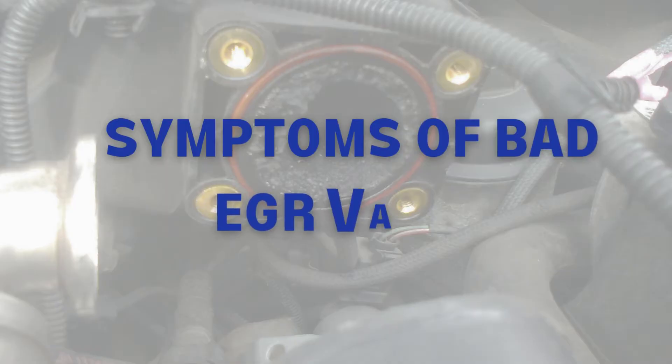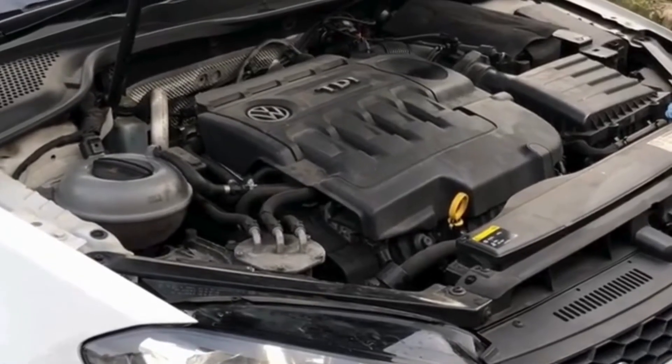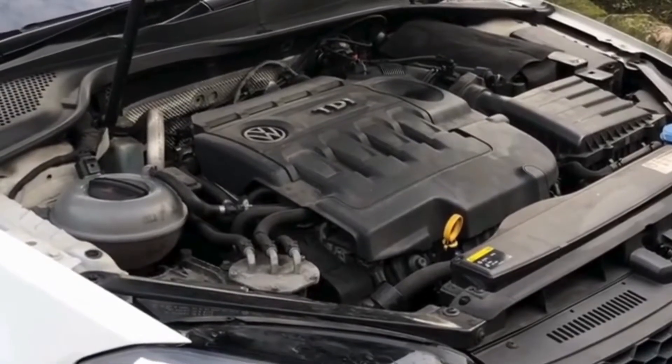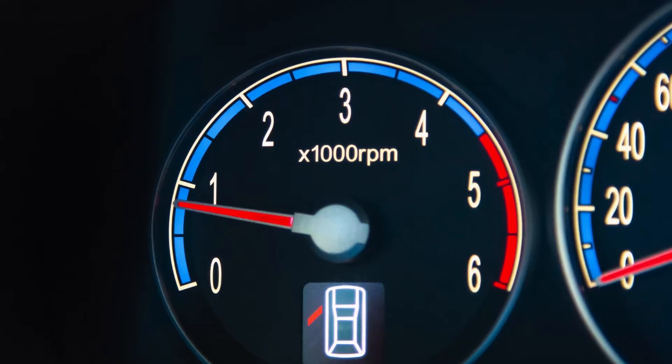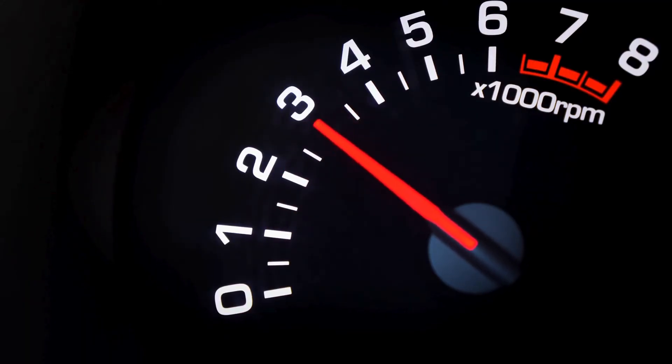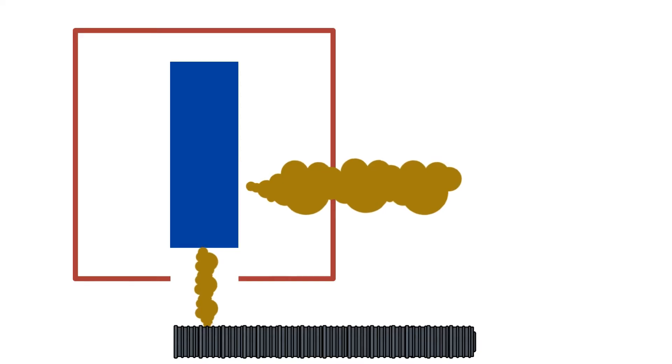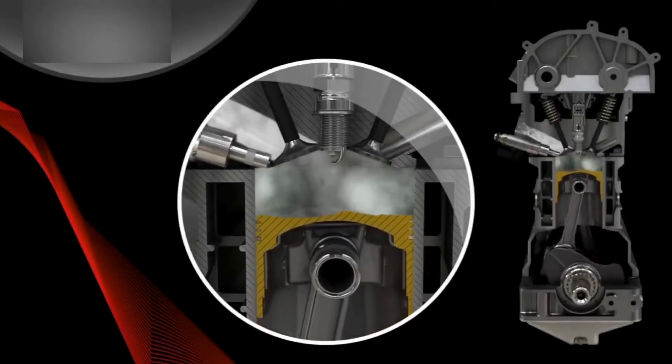Now, let's outline the most common signs of a bad EGR valve. Number one, a rough or unstable idle speed. Carefully observe the tachometer next time your engine is idling at a stoplight. A healthy idle is steady, but a faulty EGR valve often causes the engine RPMs to oscillate up and down inconsistently. This happens as an open EGR passageway allows excess exhaust gases to enter the intake, causing misfires and combustion variations.